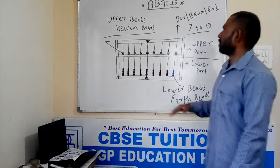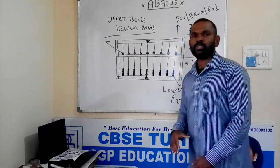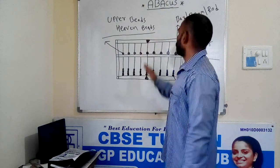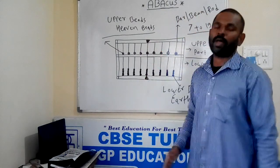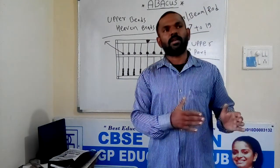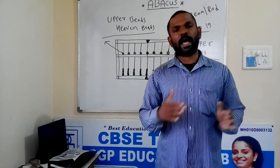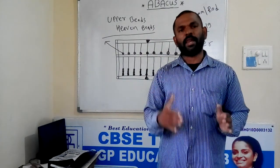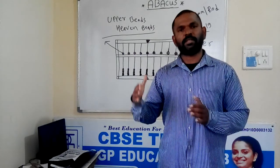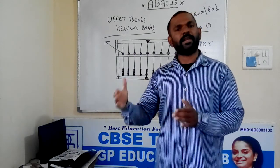Some Abacus have 7 bars, some have 19 bars — which means 7, 9, 11, 13, 15, 17, and 19.